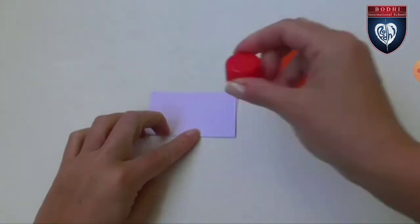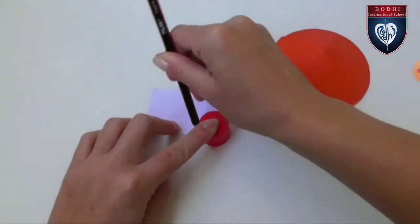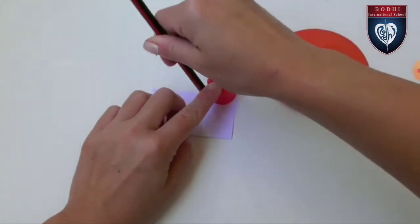Now take a small piece of paper sheet and draw tiny circles over it. Make sure it is smaller than the cone.